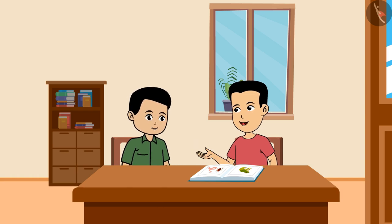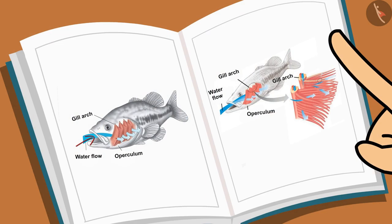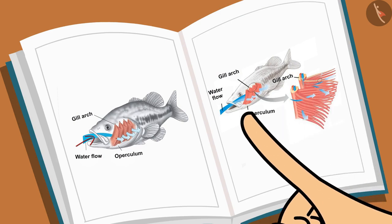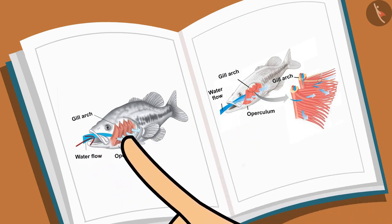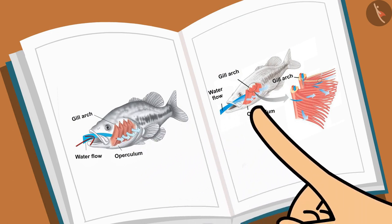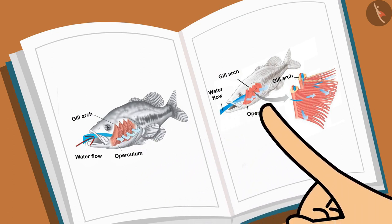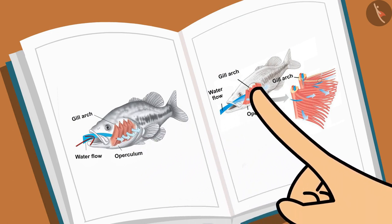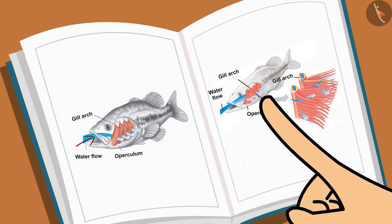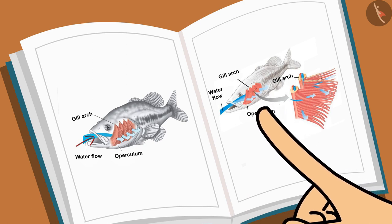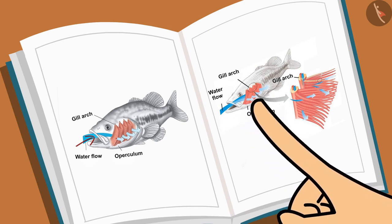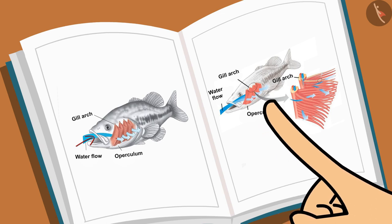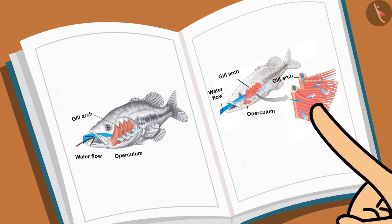Gills act like lungs for fish, helping them breathe. The book explains that gills are located on each side of the fish's head. The fish takes in oxygen-rich water through its mouth and pumps it to its gills, where blood vessels inside absorb the dissolved oxygen.